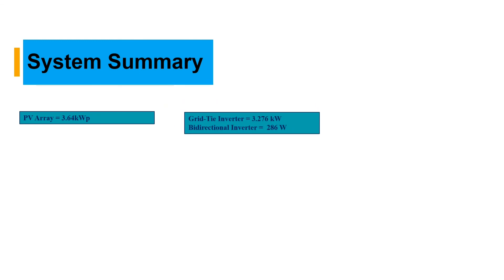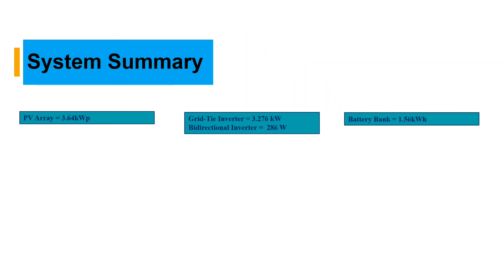System summary: we have a PV array of 3.64 kilowatt-peak, a grid-tie inverter of 3.276 kilowatts, a bidirectional inverter of 286 watts, and a battery bank of 1.56 kilowatt-hours. Thank you so much for watching. Please don't forget to subscribe to the channel, share, comment and like this video. You can also go and design your own system based on your own information and how you want it to operate.